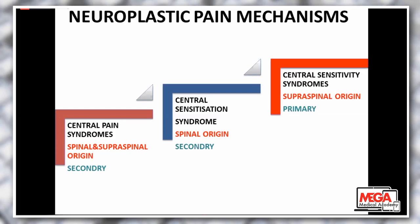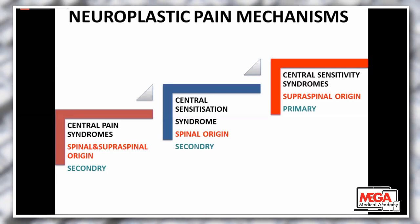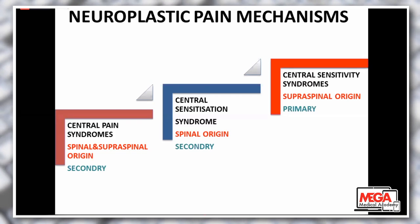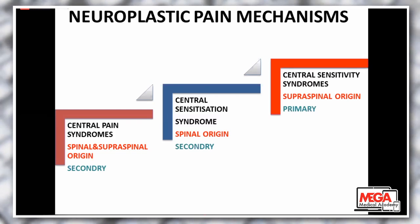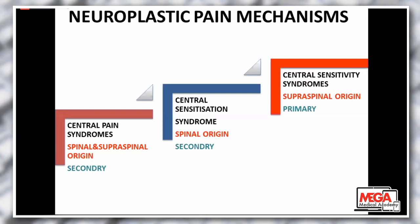If you talk about central sensitivity syndrome, it is almost always primary. It is due to a supraspinal error in the cortex or in the hypothalamic-pituitary-adrenal system, which can lead to alteration of the nociceptors and sensation of pain despite there being no injury. This terminology is very important to remember, and I will repeat it throughout my presentation.